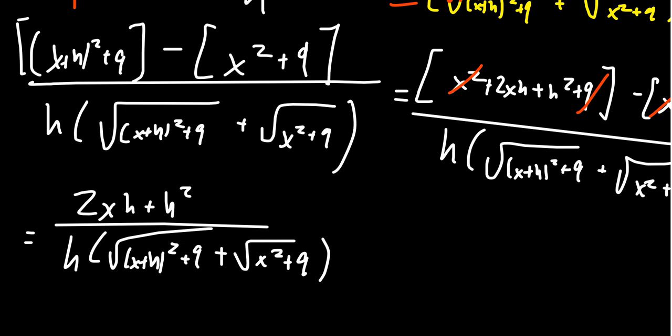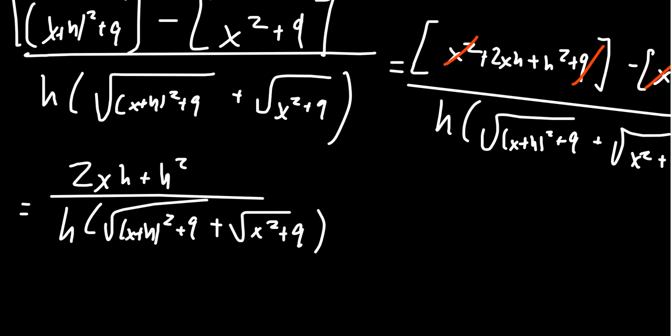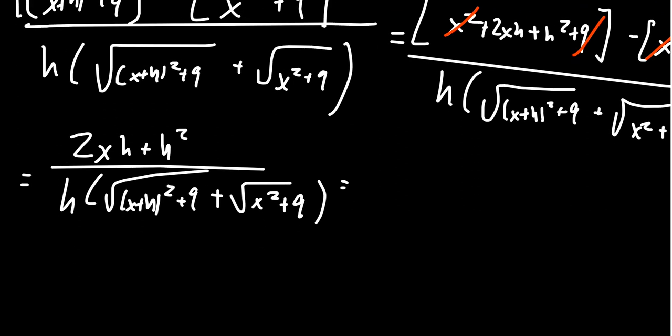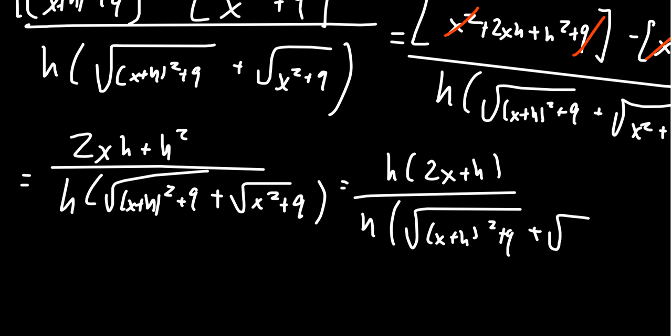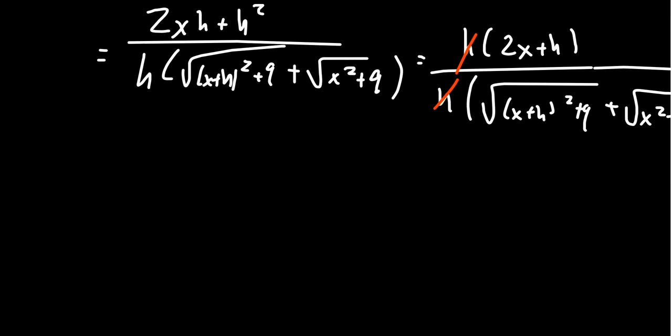So the numerator now, you'll notice if you did everything right, everything should cancel out except for, after everything's canceled out, everyone in the numerator is divisible by h. So factor out the h because we need to cancel it out. You get h times 2x plus h, and this is above h, and then you get those square roots again. Carry that heavy luggage up the stairs. And now the h cancels on the top and bottom.